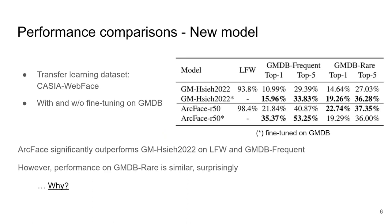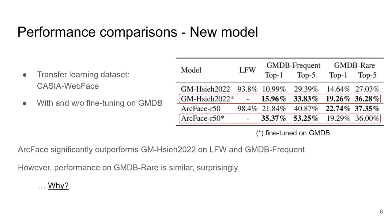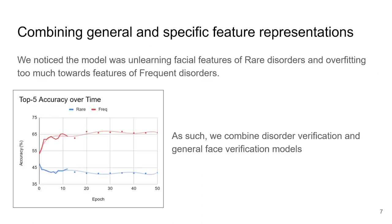First, we compared the old architecture with the new one using the old transfer learning dataset, KCL web-face, and compared the general face verification and disorder verification performance before and after fine-tuning on GMDB. In the dataset on the right, we see that the new ArcFace before fine-tuning significantly outperforms old models on both LFW and GMDB. After fine-tuning, ArcFace greatly improved the performance on GMDB Frequent. However, the performance on GMDB Rare decreased, which was unexpected.